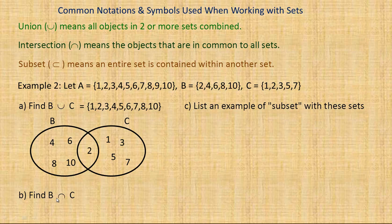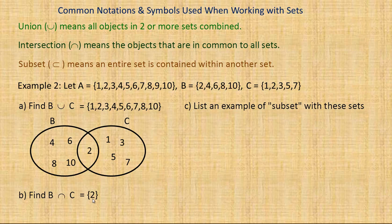The intersection means the objects common to all sets — in this case sets B and C. Two is the only number that appears in both sets, so the intersection of B and C is just the number two.